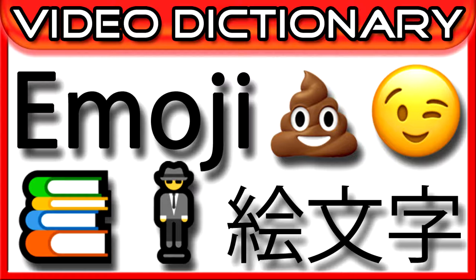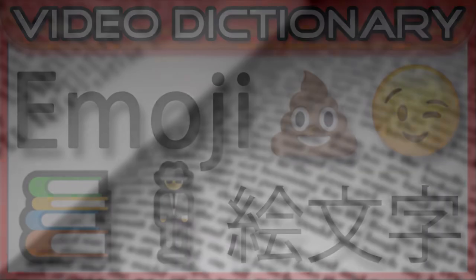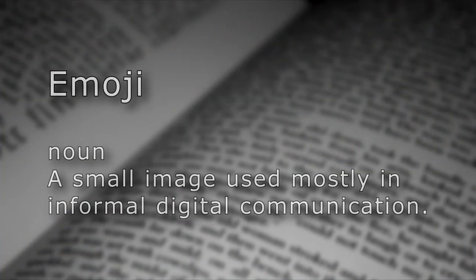What does an eggplant, a hovering man in a suit, a pile of poo, and a shrugging person have in common? They're all examples of an emoji — noun — a small image used mostly in informal digital communications.